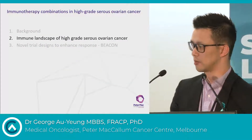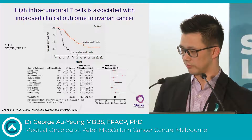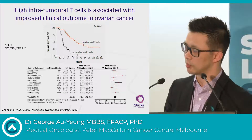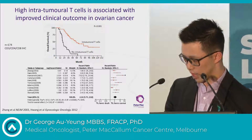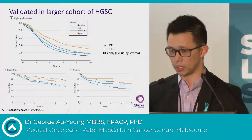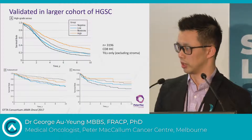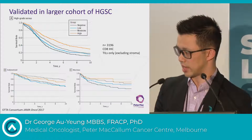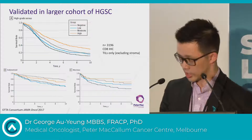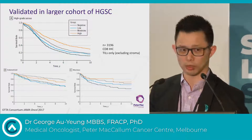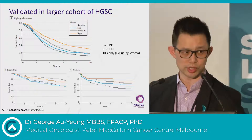Now we're talking about immune landscape. Tarek already mentioned this study — 15 years since George Coukos and his group reported that patients whose tumours had a higher TIL count had better overall survival. This was subsequently validated in a paper published last year from the OTTA consortium, in a much larger cohort of over 3,000 samples, showing that a high CD8 count in the tumour — these analyses excluded the stroma — appeared to confer a much better prognosis. This was also seen in a couple of other histological subtypes, including endometrioid and mucinous ovarian cancers.